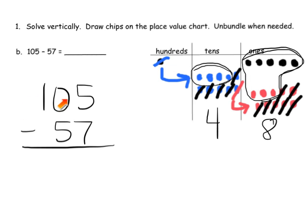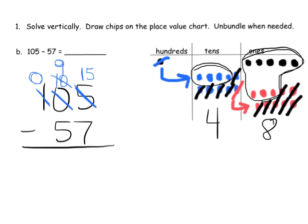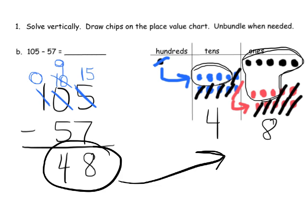Now let's do that using the standard algorithm. We have 5 ones take away 7 ones — that's not enough. So we're going to have to go all the way over to the 100s column, unbundle 100, and get 10 tens. Now we're going to unbundle a 10, leaving us with 9 tens, and that gives us 15 ones — because we already had 5 ones. 15 minus 7 is 8. 9 tens take away 5 tens gives us 4 tens. And 0 hundreds take away 0 hundreds is nothing. So we get 48.